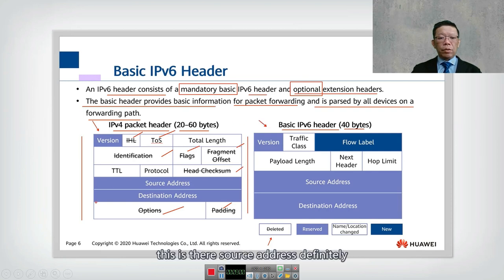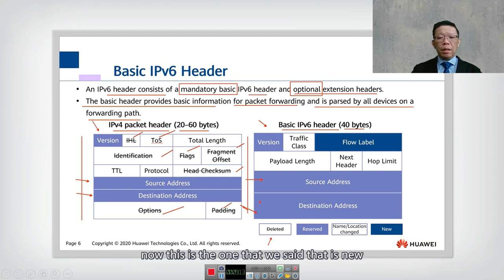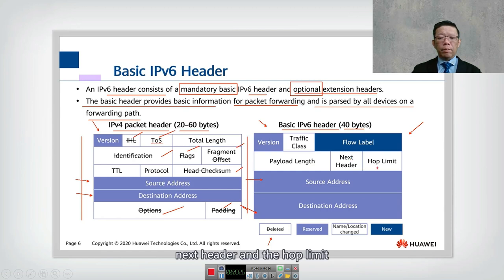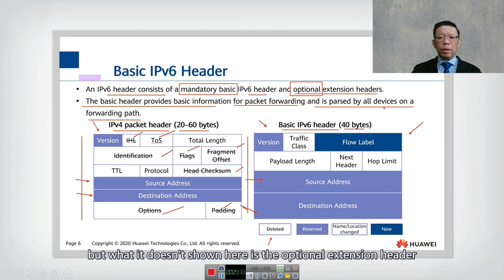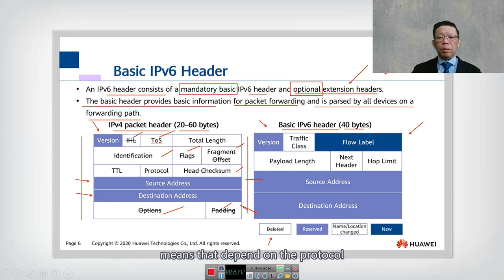Some fields are maintained in IPv6, such as version, source address, and destination address. New fields replace old ones — for example, the type of service field is replaced by the traffic class field for QoS. Fields whose names changed include payload length, next header, and hop limit. Behind the basic header is the optional extension header, which is not shown in the basic header diagram but can be appended depending on the protocol.